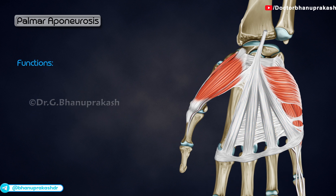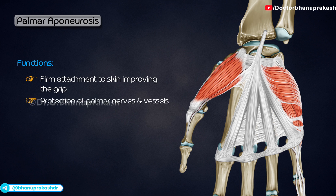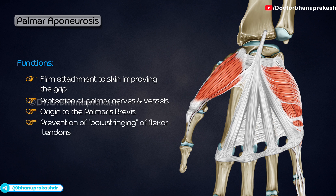It provides the following functions: firm attachment to skin improving the grip; protection of palmar nerves and vessels; origin to the palmaris brevis; prevention of bow-stringing of flexor tendons; and division of the palm into potential spaces. A point to note is that the thumb lacks a digital slip from the aponeurosis to allow free movement of the thumb.